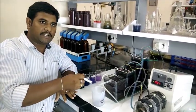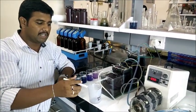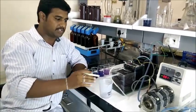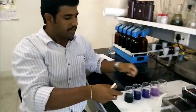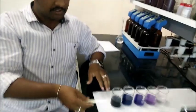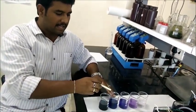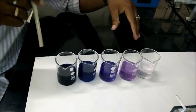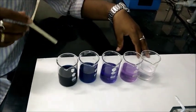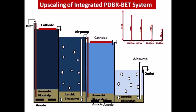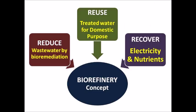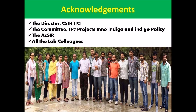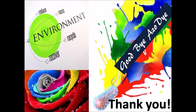The final effluent collected shows that complete mineralization of the dye has occurred. You can see the inlet dye concentration, which is a very thick blue, whereas tanks 1, 2, 3, and 4 show a visual progression of dye removal. That is why we have scaled the reactor to 60-litre capacity. The main concept is the biorefinery concept, in which we reduce waste water by remediation, reuse, and recover electricity and nutrients. Thank you very much.